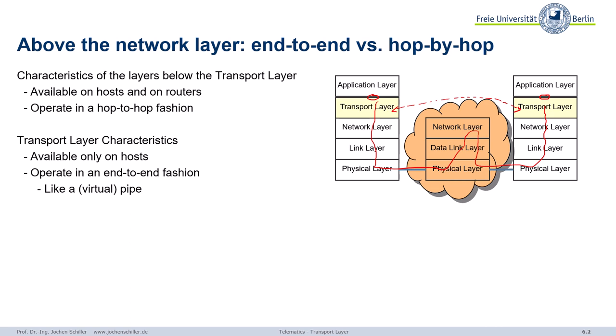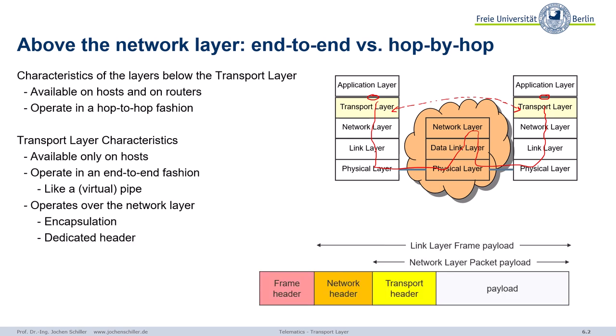The transport layer is basically like a pipe connecting one process, one application with another application. We encapsulate all our data, create a dedicated transport header, and forward the data. The payload is the data we get from a process, and then we add the transport header, the network header, and the frame. We'll also see interaction between layer 4 and layer 3.